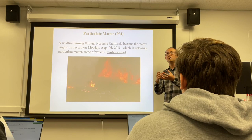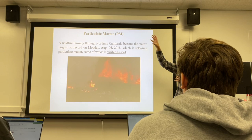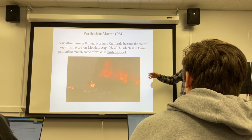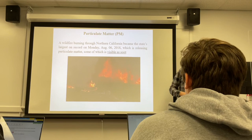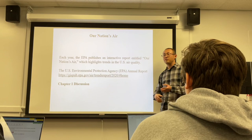Some PMs are large enough to be visible — those are called soot. Soot is a kind of PM because the particles can remain suspended in air. For example, a wildfire in California in 2018 produced a lot of PM, and some were visible as smoke.